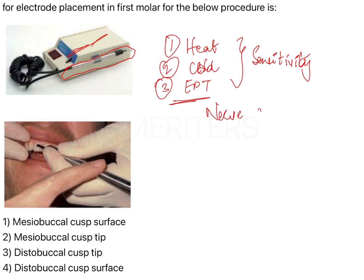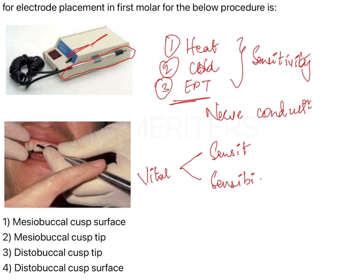Pulp vitality can be broadly classified into sensitivity and sensibility. Sensitivity tests are easier but in actual endodontics are not considered to measure true vitality, because vitality refers to the blood supply of the pulp. The tests that measure actual vitality are laser Doppler flowmetry and pulse oximetry — these are sensibility tests that assess blood flow in the pulpal organ.